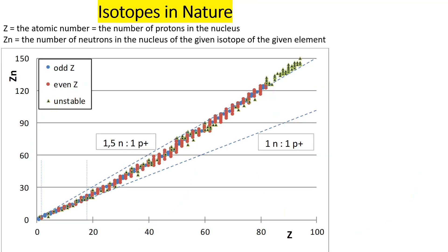Let me show you the graph I promised earlier, about the ratio of neutrons to protons in different isotopes. On the x-axis I show Z (the atomic number, which equals the number of protons), and on the y-axis I show the number of neutrons in different isotopes.